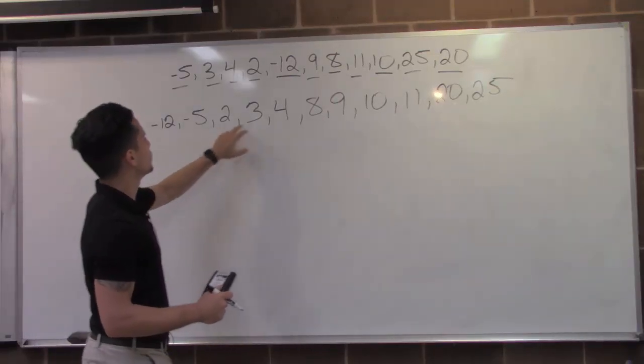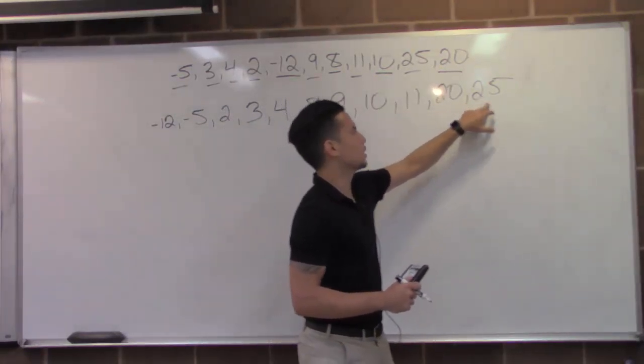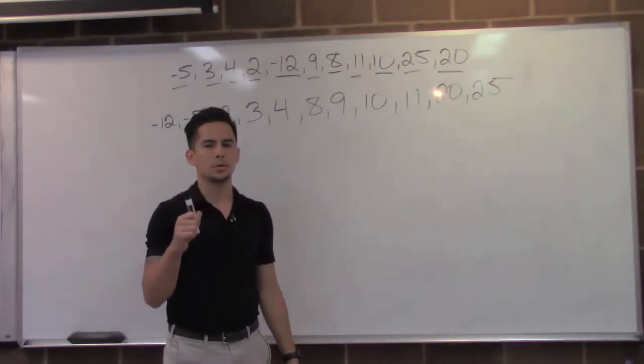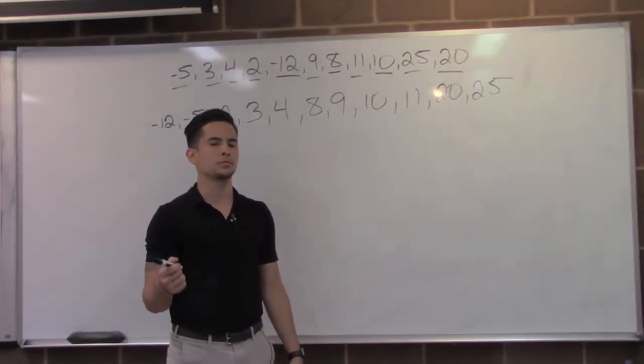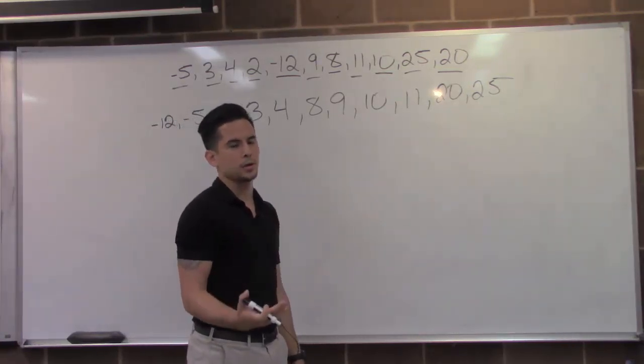I have one, two, three, four, five, six, seven, eight, nine, ten, eleven. So having eleven numbers is going to tell me that I'm going to have one number in the middle, which can help me easily find one part of the five number summary, which is our median.